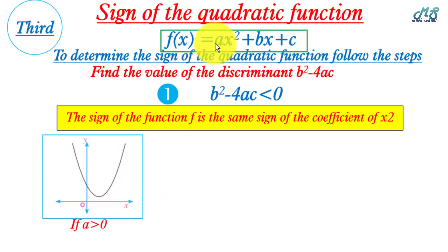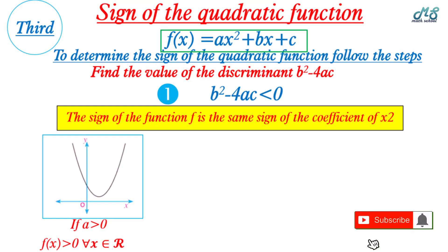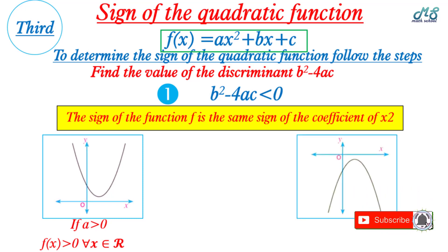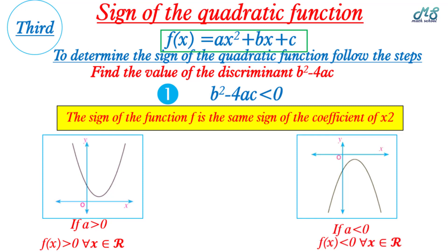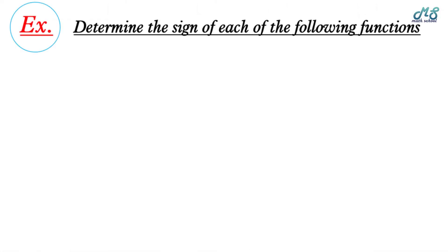If a > 0, we deduce f(x) > 0, meaning the function is positive for all x ∈ ℝ. If a < 0, the coefficient of x squared is negative, so f(x) < 0, meaning the function is negative for all x ∈ ℝ.